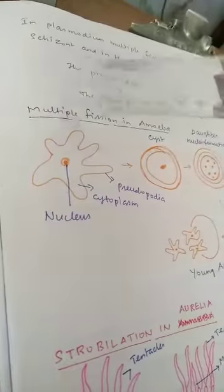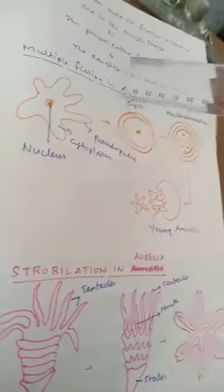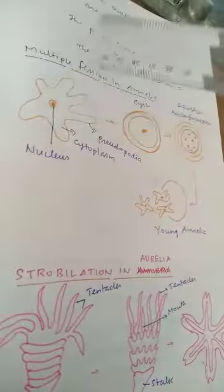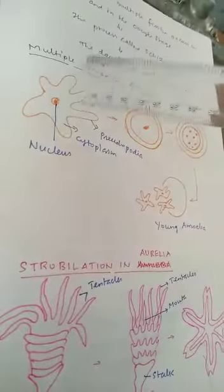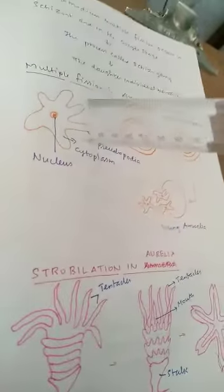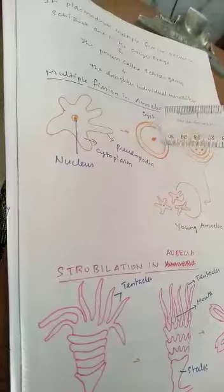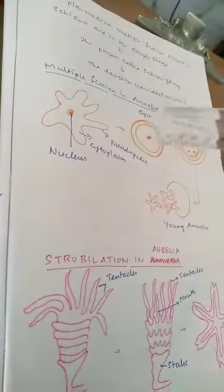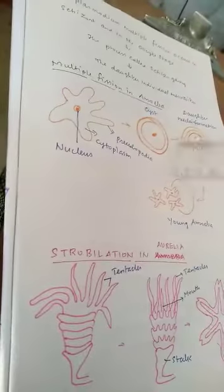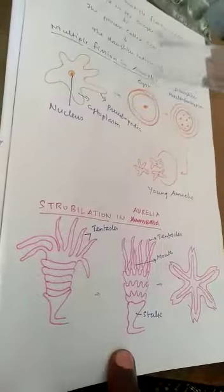Next is Multiple Fission in Amoeba. During unfavorable conditions — high temperature, scarcity of food — Amoeba replicates by Multiple Fission. The structure of Amoeba has a nucleus at the center, surrounded by cytoplasm and pseudopodia. Pseudopodia are the locomotory organs of Amoeba. During unfavorable conditions, the pseudopodia retract and the Amoeba forms a cyst wall. The nucleus then divides into many nuclei. When conditions become favorable, the cyst wall breaks down and young Amoebas are released. This process is called Multiple Fission in Amoeba.